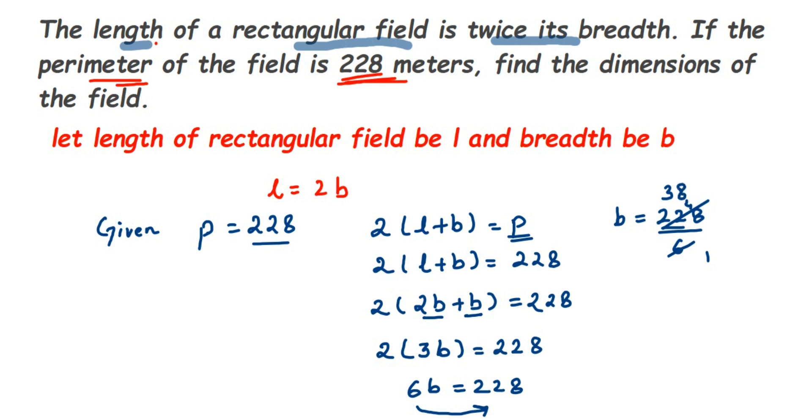So B is equal to 38. Now if this cancellation is confusing you, you can divide 228 by 6, or whatever way is comfortable for you. So we got B is equal to 38. Now we have to find out the L value. We know L is equal to 2B, right?